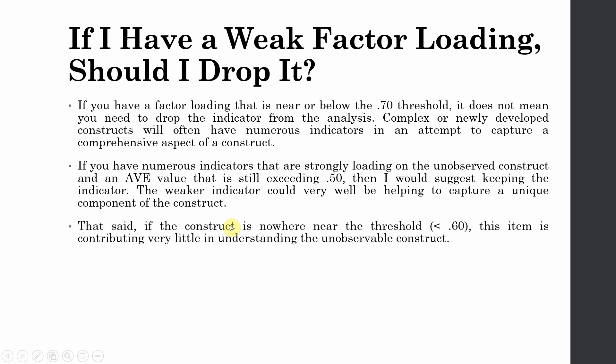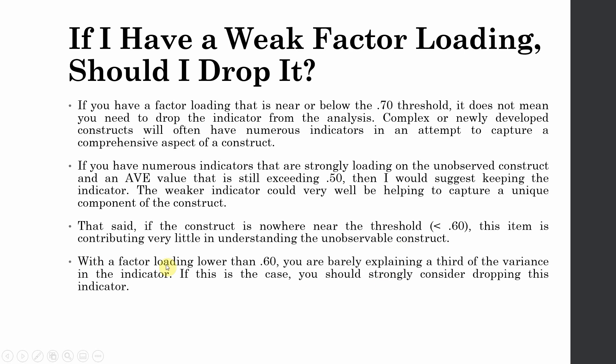That said, if the construct is nowhere near the threshold of 0.60, like if it's less than 0.70 but obviously less than 0.60 as well, this item is contributing very little in understanding the unobservable construct. With a factor loading lower than 0.60, you are barely explaining a third of the variance in the indicator. If this is the case, you should strongly consider dropping this indicator.